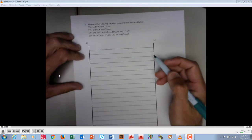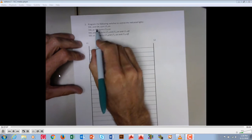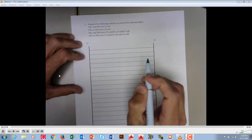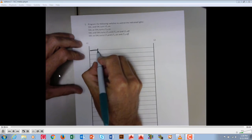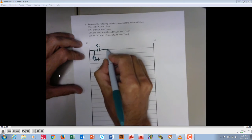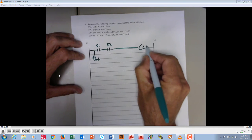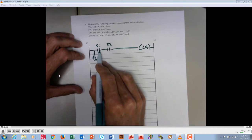The second ladder logic assignment is going to deal with AND and OR circuits. Here we have switch 1 and switch 2 turns light 9 on. So if switch 1 is made and switch 2 is made, light 9 would go on.